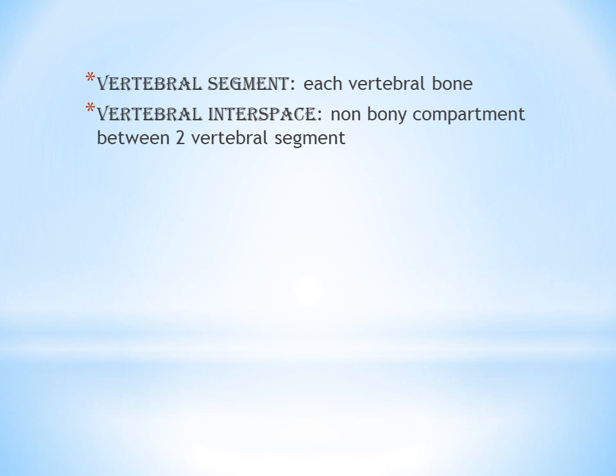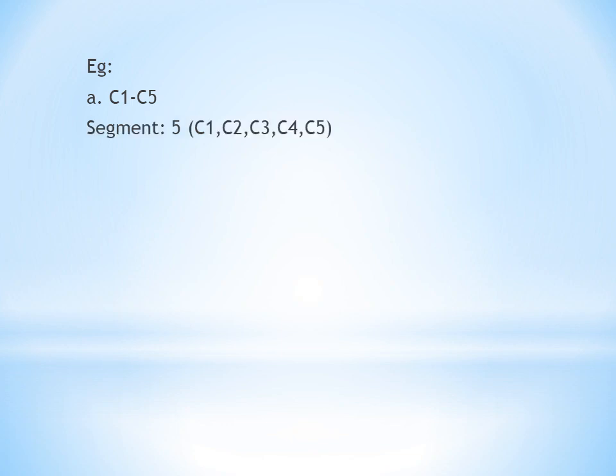For example, between C1 and C2 you have one vertebral interspace. Between C1 and C3 you have two interspaces: C1–C2 and C2–C3. For C1 to C5, the vertebral segments are C1, C2, C3, C4, C5 — five segments.